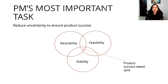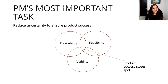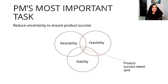Before we talk about how to deal with uncertainty, I think it's important that we spend some time talking about why we want to minimize uncertainty and what are some of the areas that we must focus on. As a product manager, what do you think your most important task is? I think that it is to build a product that is successful. Product success is really dependent on three things: product desirability, feasibility, and viability.